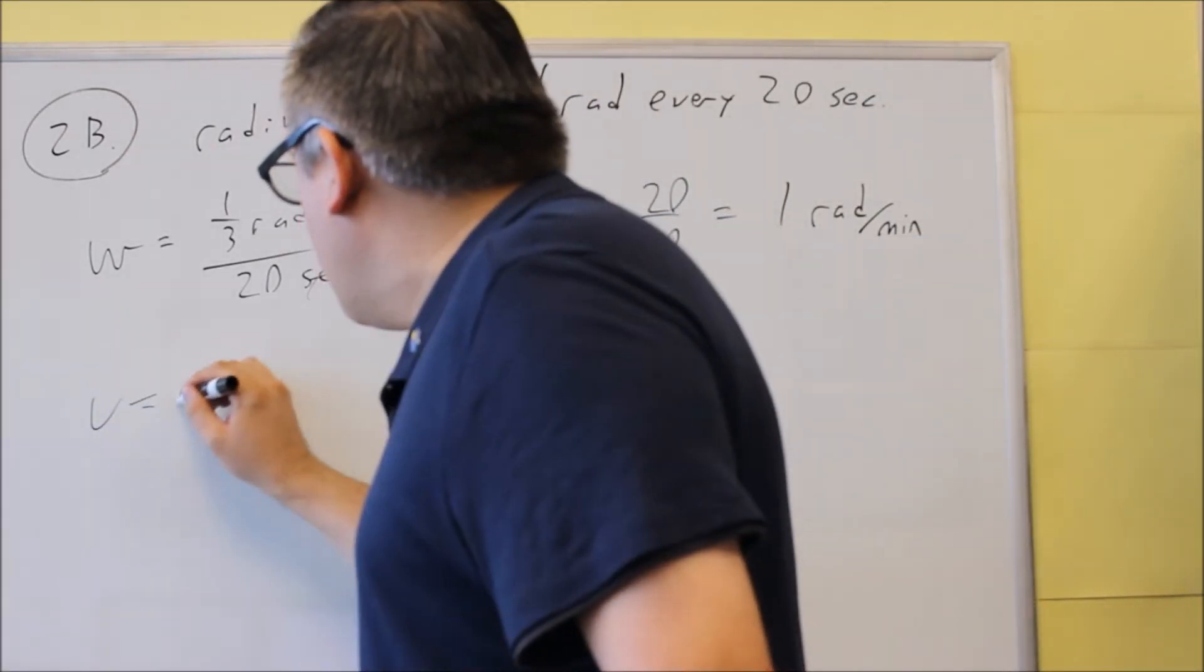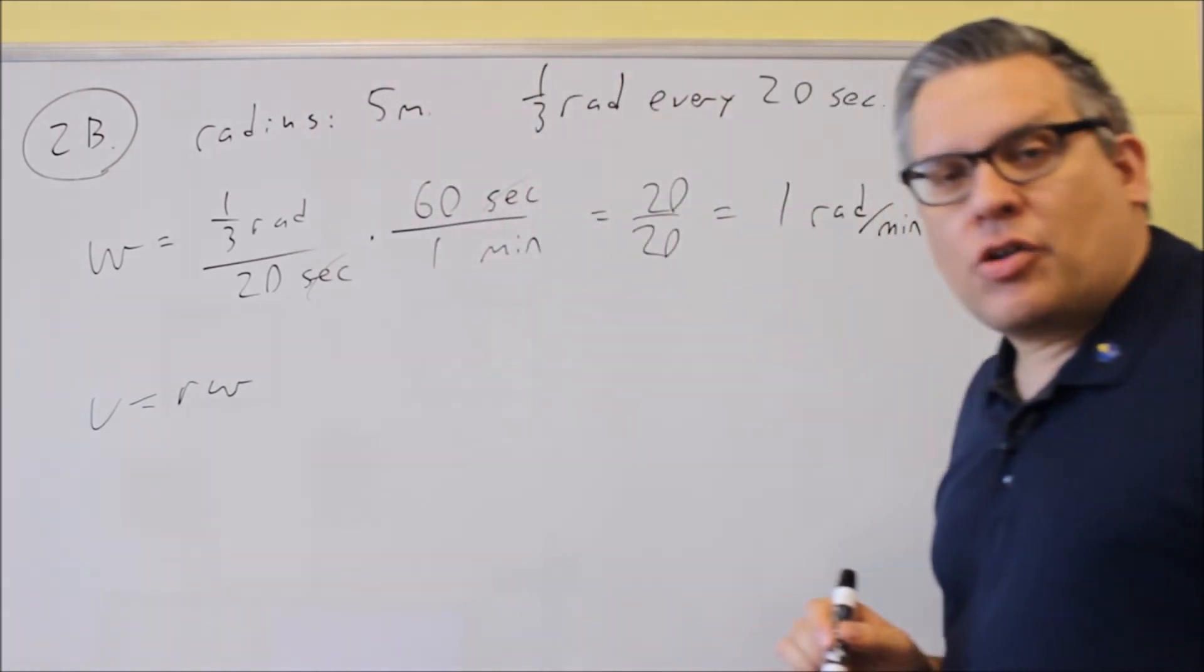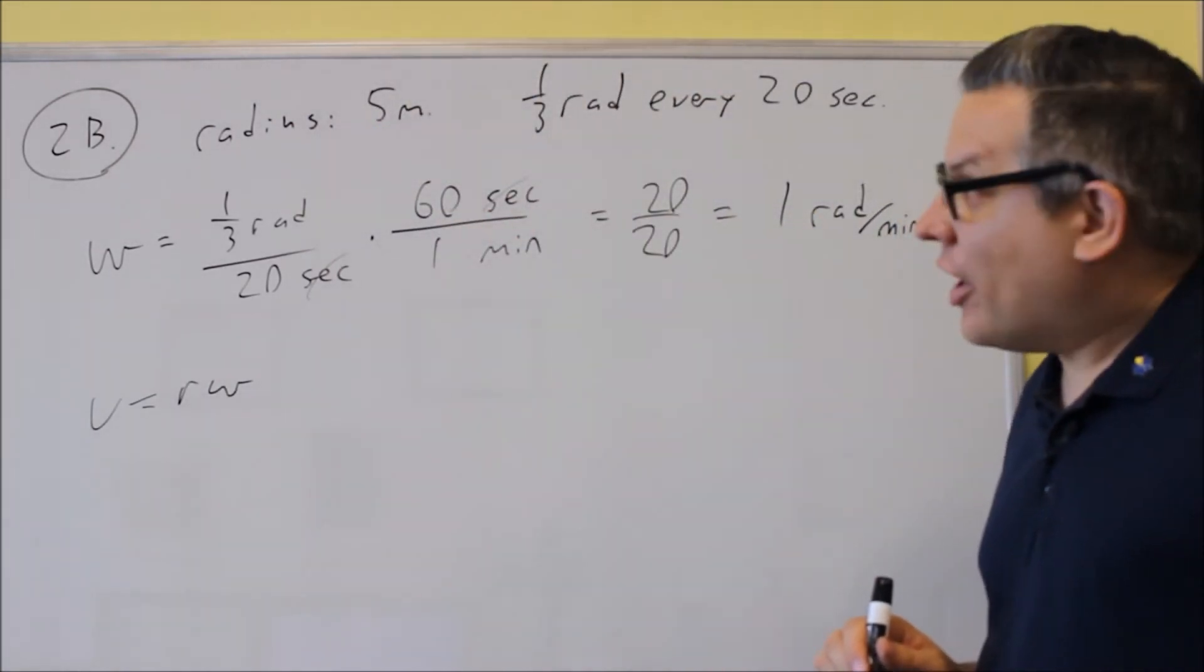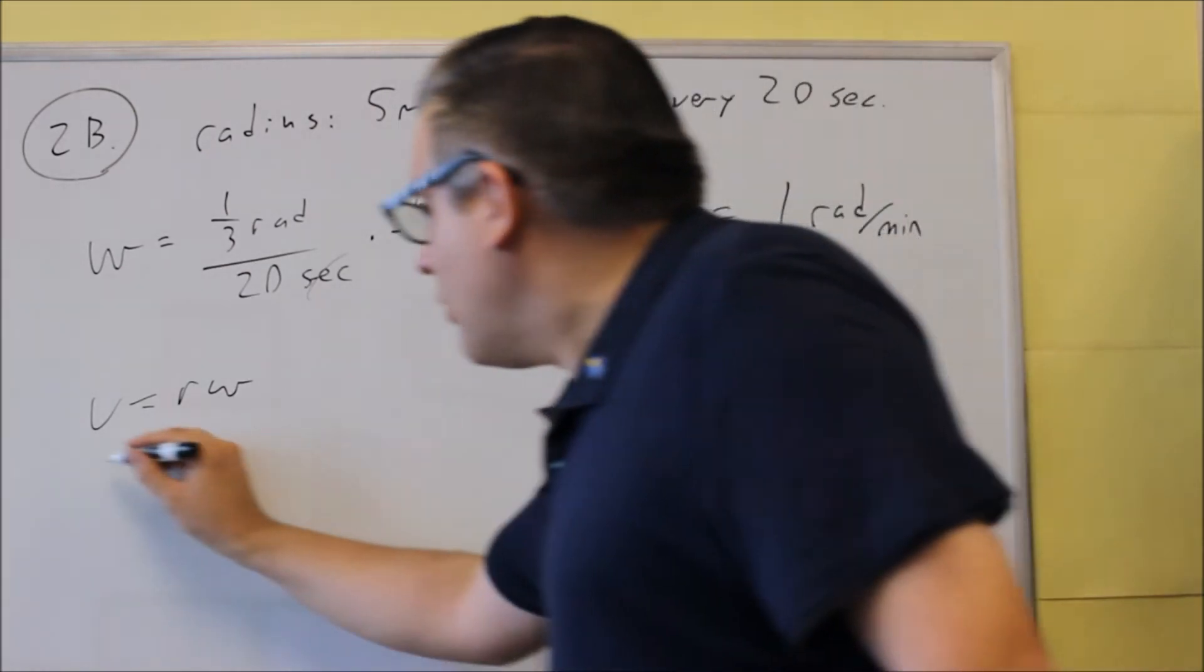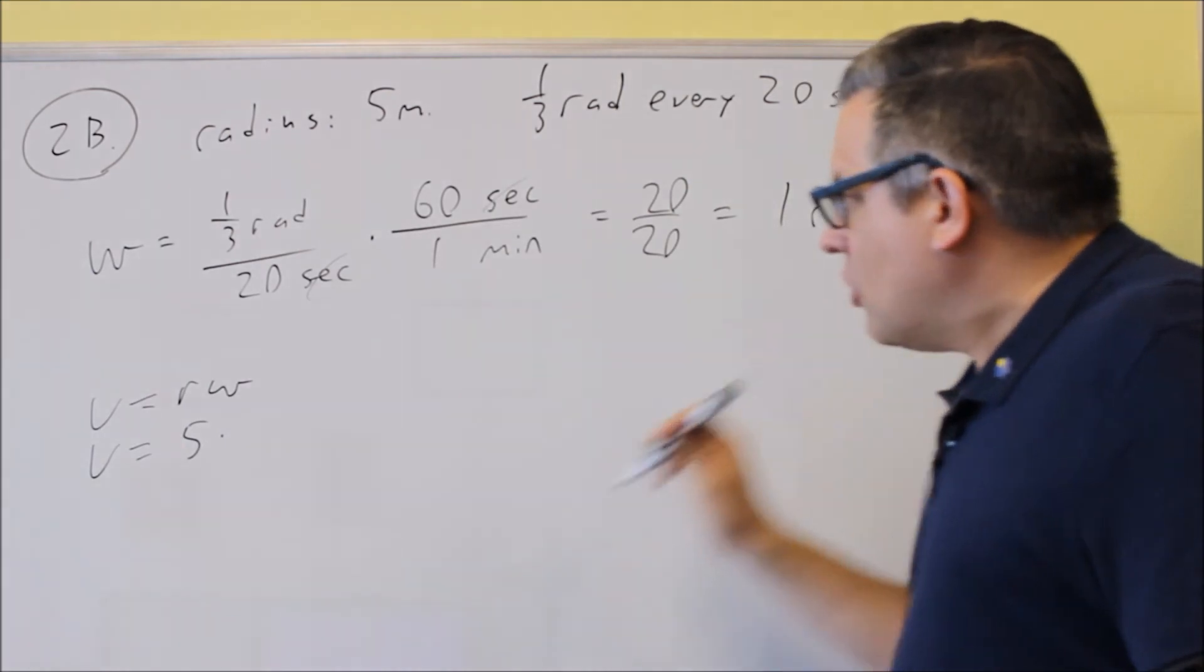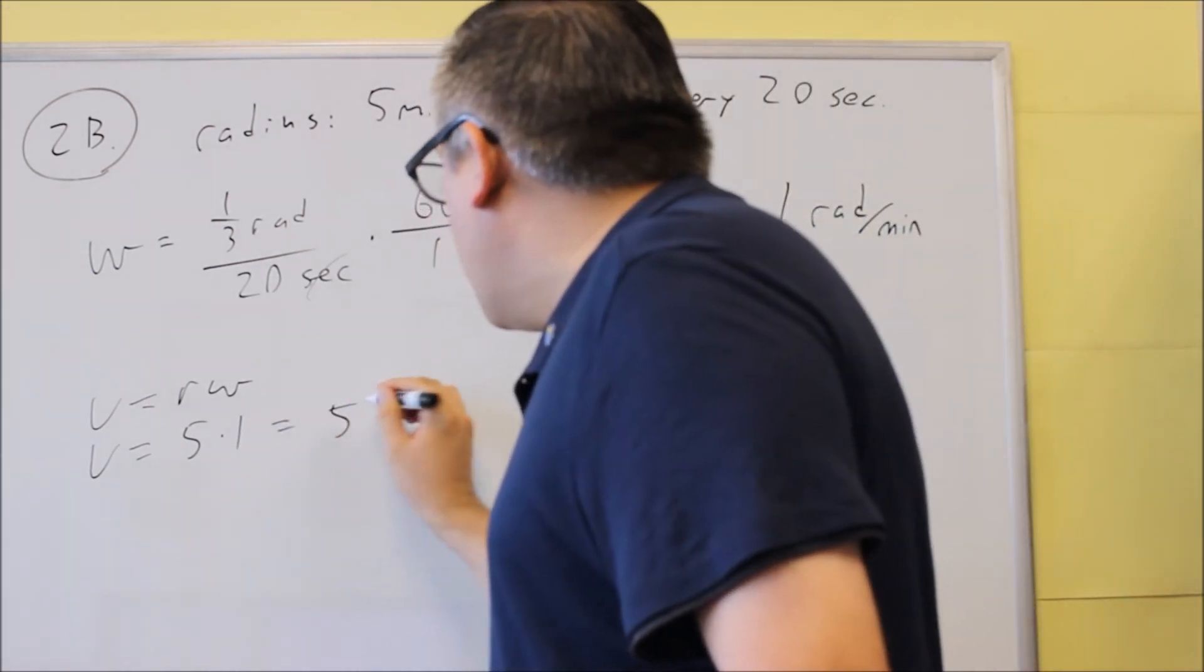Next, we're going to do V equals R omega. We want to find the linear speed of that object going around. The radius was given as 5. So we have 5 times 1. We get 5.